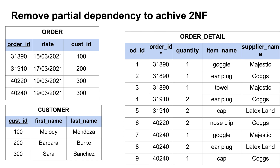We also introduce a primary key for the customer table called cust_ID, and we add it as a foreign key in the order table to connect customers with their orders. In the order table, the third column is now cust_ID, acting as a foreign key linking to the customer table. As a final check, a quick glance at the order and customer tables shows there are no more partial dependencies in either of those two tables, so we can now focus on the order detail table.